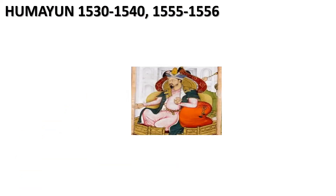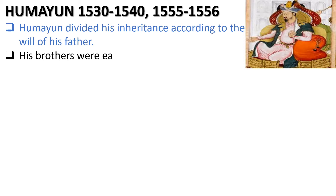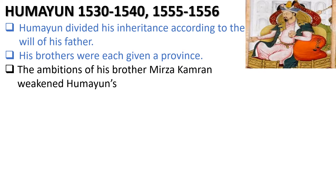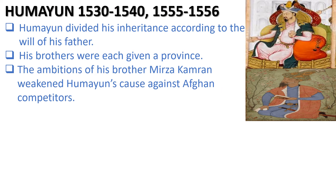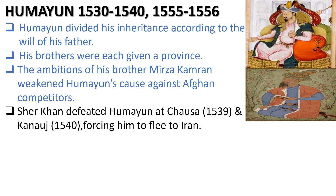Humayun ruled from 1530 to 1540, and again 1555 to 1556. He was the son of Babur. Humayun divided his inheritance according to the will of his father, giving his brothers each a province. The ambitions of his brother Mirza Kamran weakened Humayun's cause against Afghan competitors. Because of Mirza Kamran's lack of support, he had to face defeat at the hands of Sher Khan. Sher Khan defeated Humayun at Chausa in 1539 and at Kanauj in 1540, forcing him to flee to Iran.